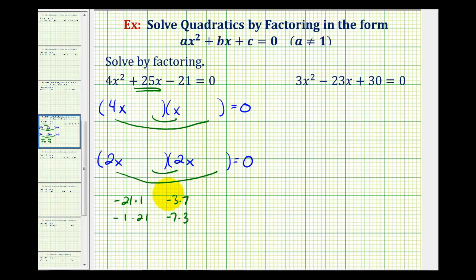Let's go ahead and use these two factors here and place them in our binomial factors. So we'll try negative three here and positive seven here as well as here. And now we'll check the sum of the inner and outer product to see if we can come up with positive 25x.